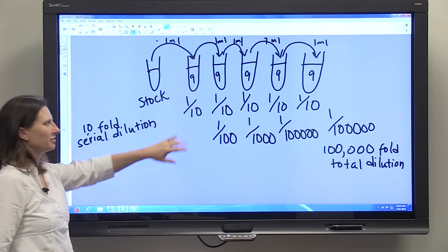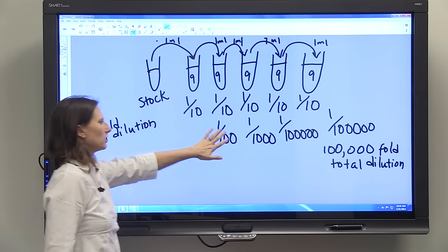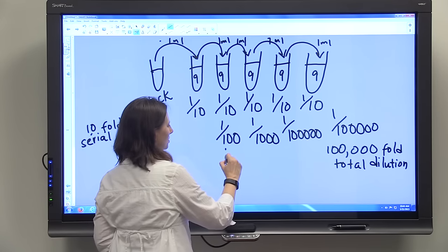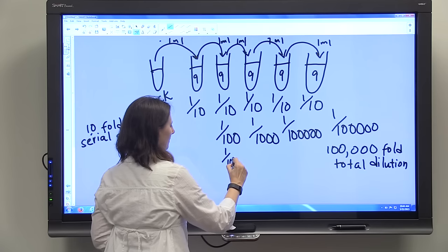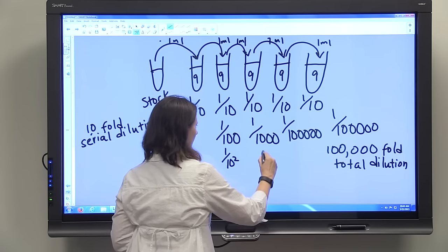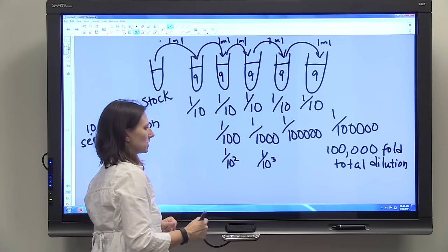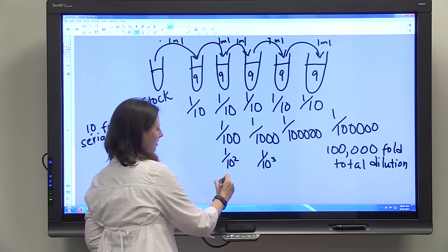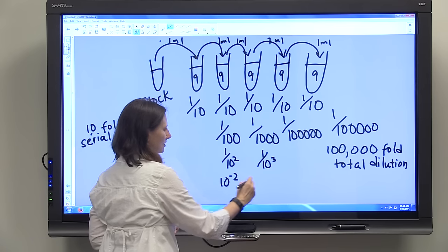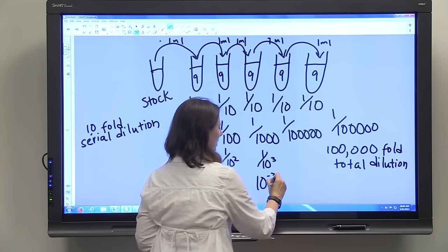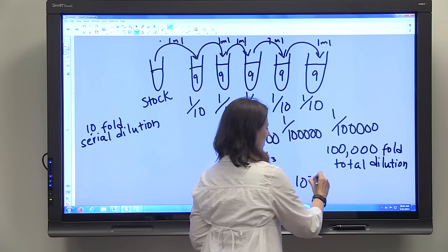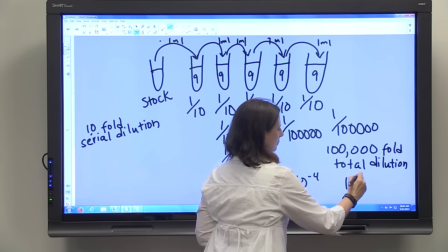And just for the sake of looking at these numbers, you can also always express using scientific notation, this as one out of ten to the second, this out of one to ten to the third, or this is just ten to the minus two, ten to the minus three, ten to the minus four, and ten to the minus five.